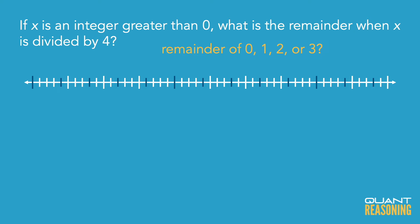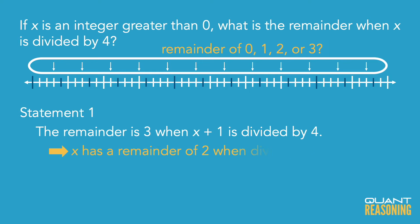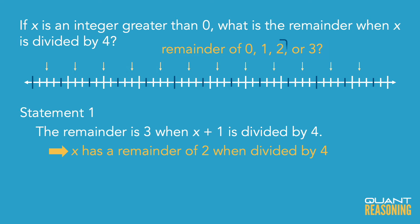Statement 1 tells us which category x plus 1 belongs to. Going back to our visualization on the number line, if I know which category x plus 1 belongs to, can I infer which category x belongs to? Well, x is just one unit to the left of x plus 1 on the number line. So if x plus 1 belongs to the category of remainder 3, then x belongs to the category of remainder 2.